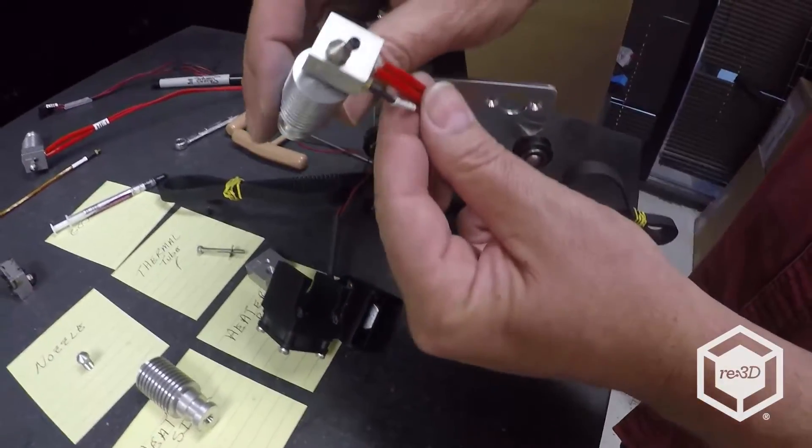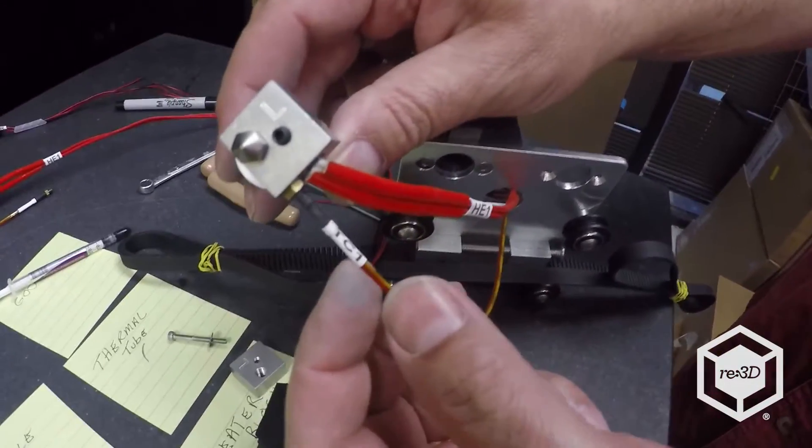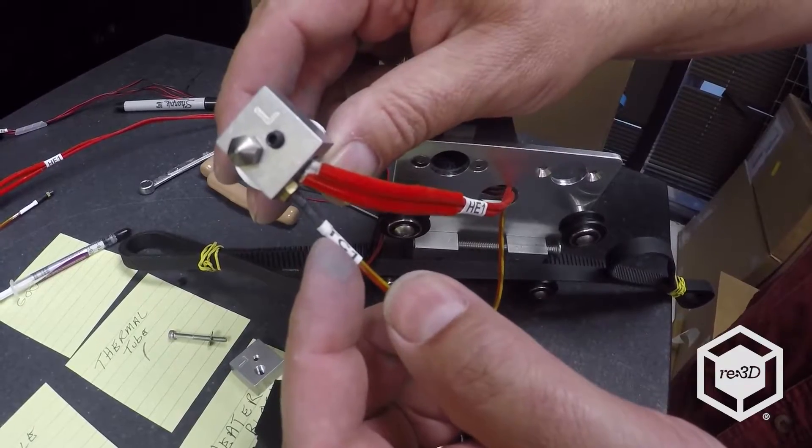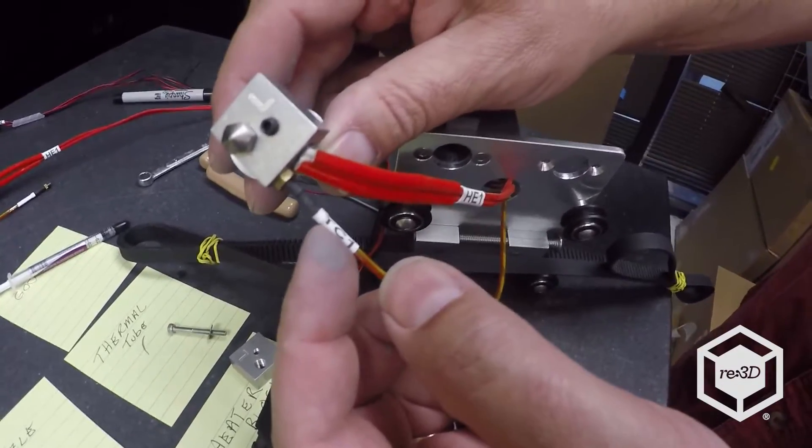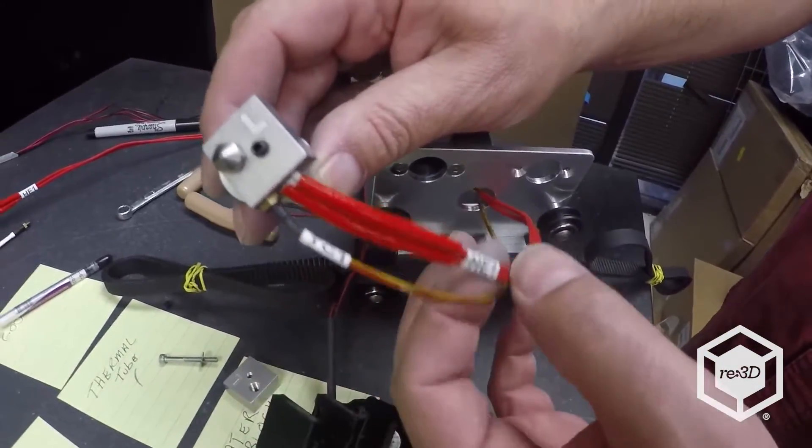You see what's also connected then. So you have your hot end. You can see L for left. You'll have your thermocouple and your heater cartridge.